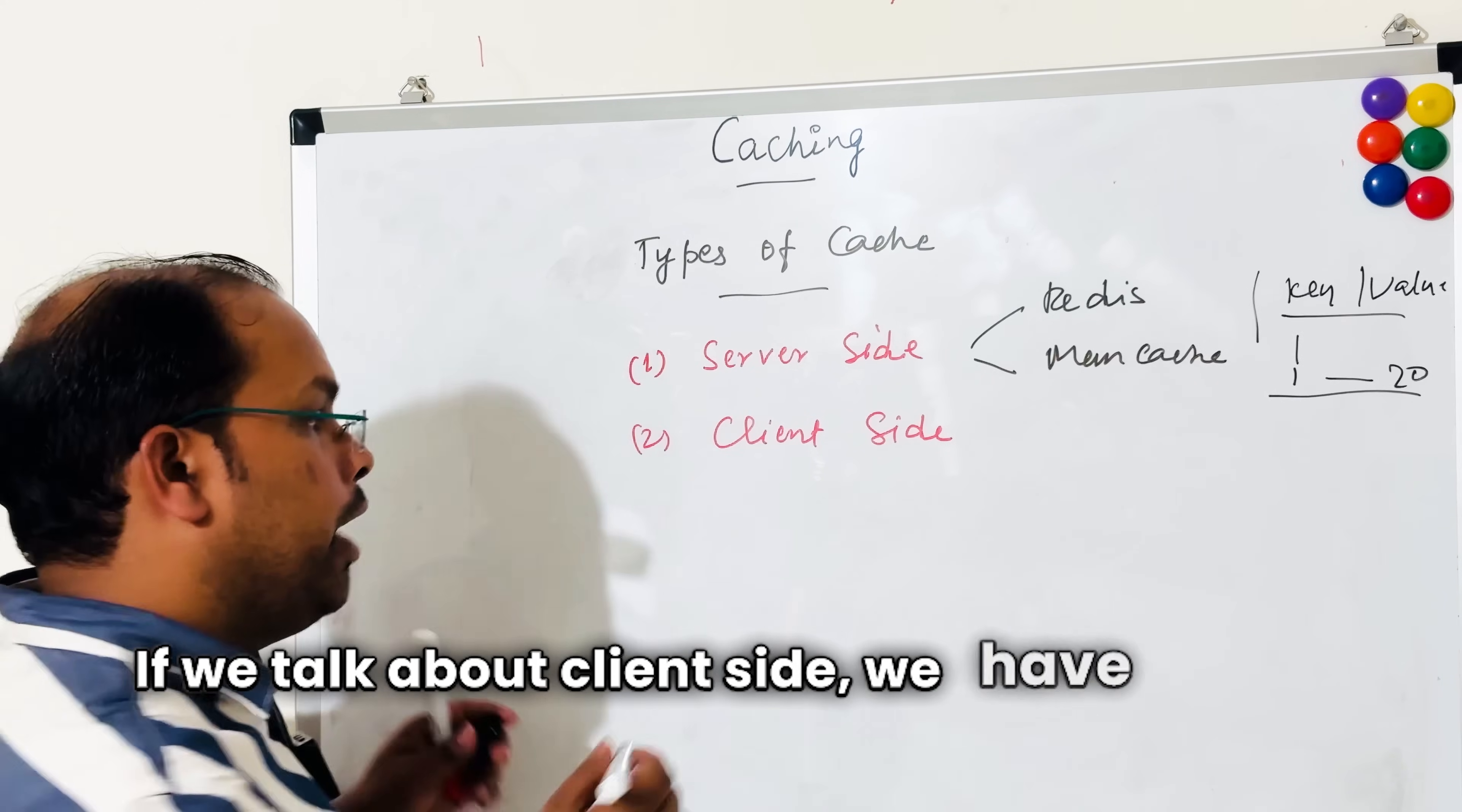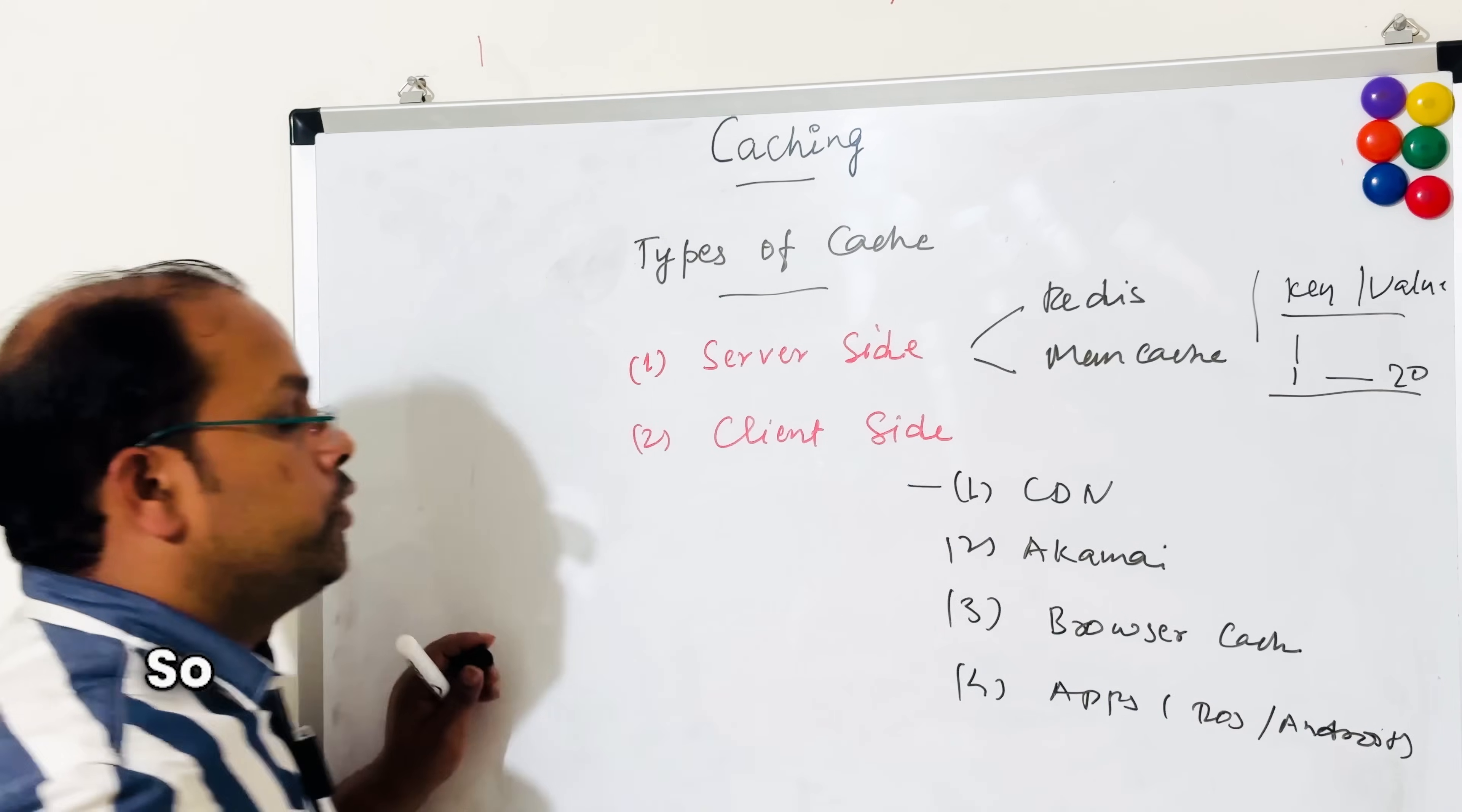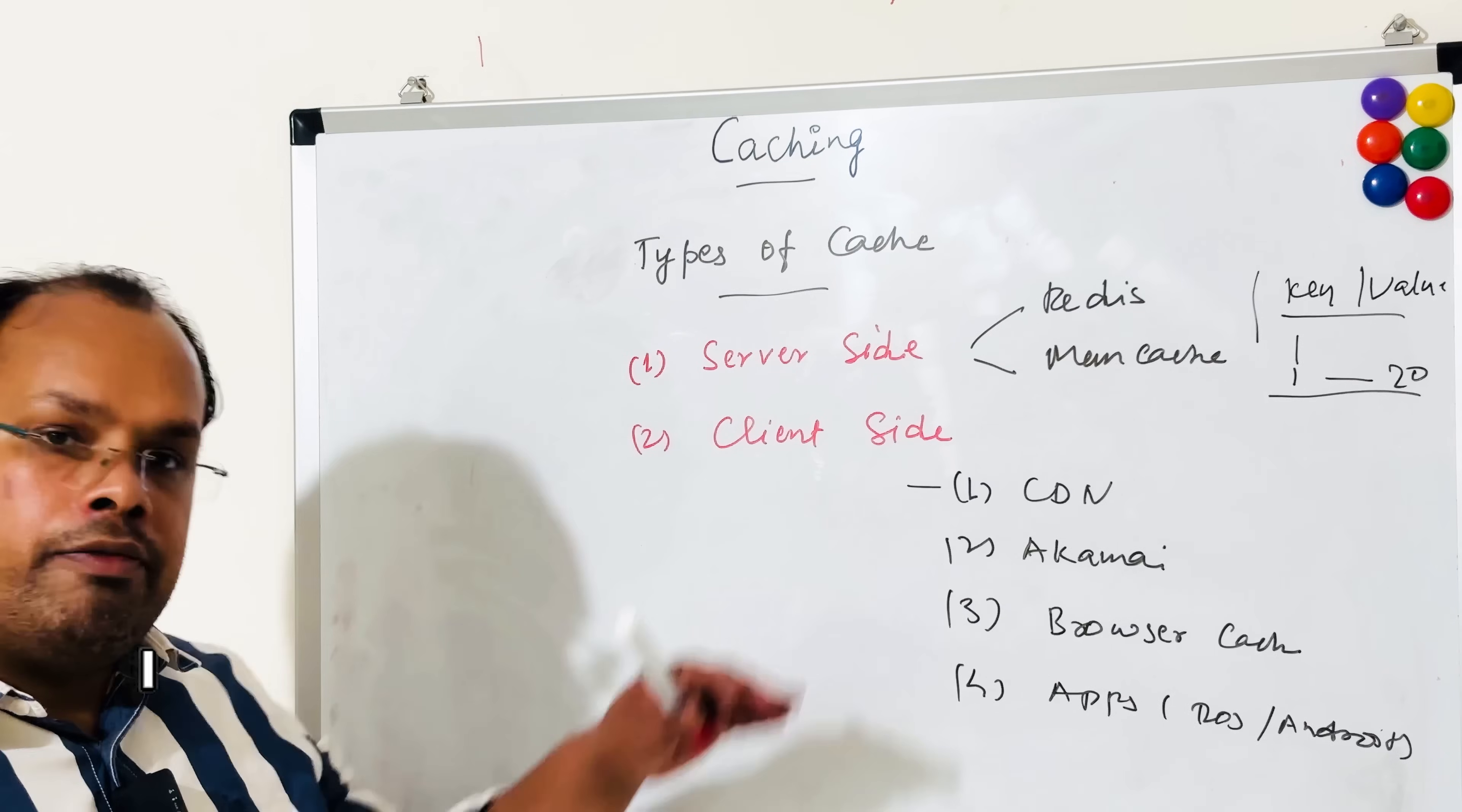If we talk about client-side, we have multiple things: for example, CDN like Akamai, browser cache, and apps also do cache as well, either iOS or Android. So guys, whatever static data we have on any particular page or any data block, we can serve that particular data from any of these technologies. Like there are a lot of static images and logos here, we can serve that particular information from these. I will cover these things in detail in a separate video.